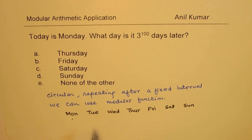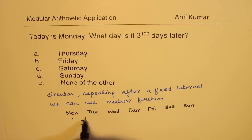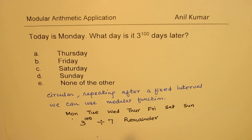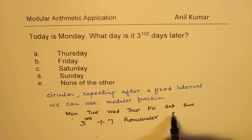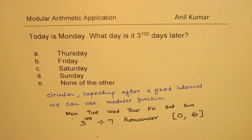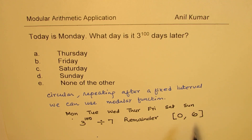So whatever this number is — three to the power of one hundred — we need to divide this number by seven and find the remainder. That remainder is a value which could be from zero to six, so there are seven possible values as a remainder. If you get remainder seven, that means it is zero remainder since you can divide seven further. So the mod function does exactly the same thing.